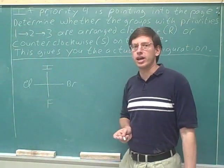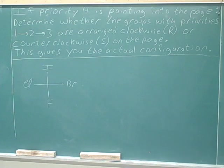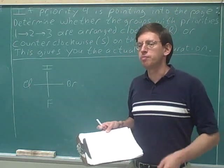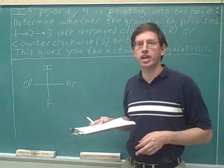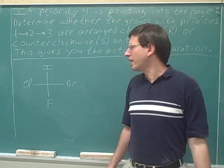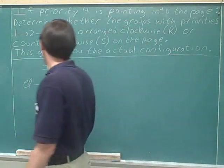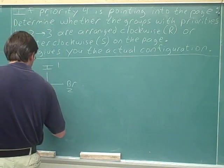Determine whether this stereocenter is R or S. I hope you will pause the video and try the question on your own before watching the explanation. First, we have to assign the priorities. I hope you have a periodic table so you can easily see that iodine has the highest atomic number and the top priority, then bromine, then chlorine, and then fluorine.